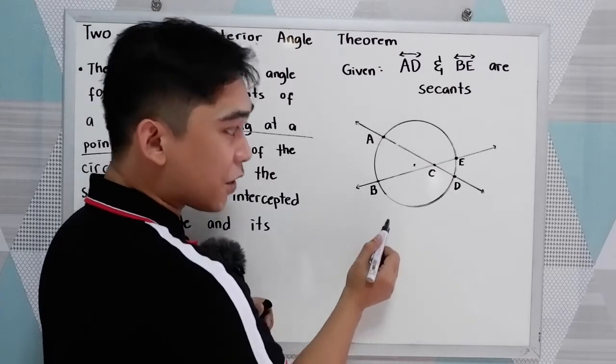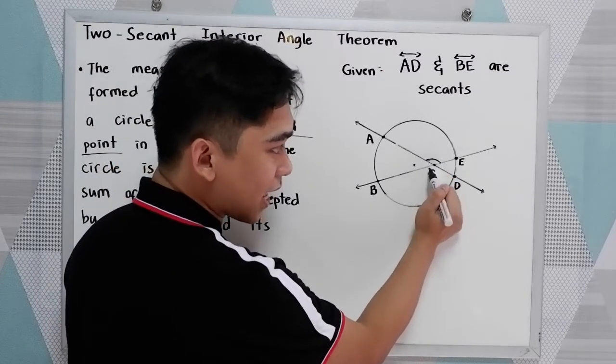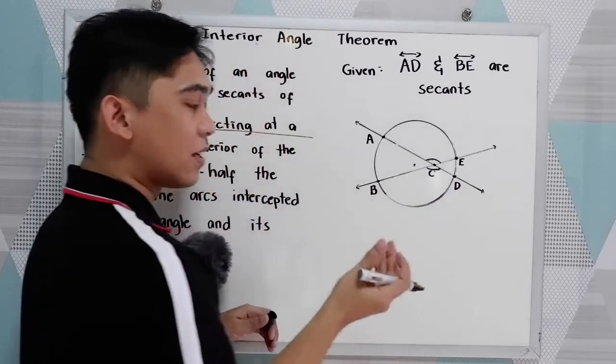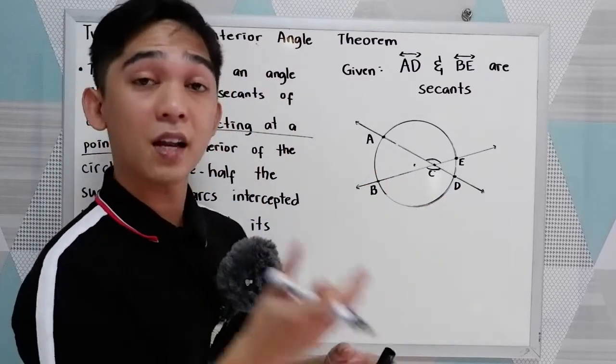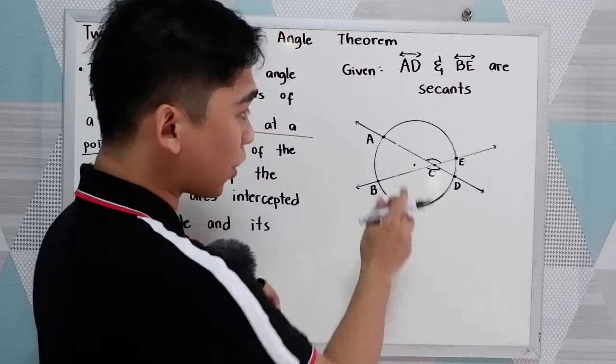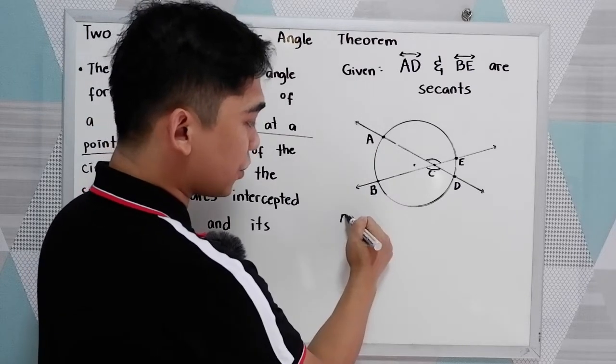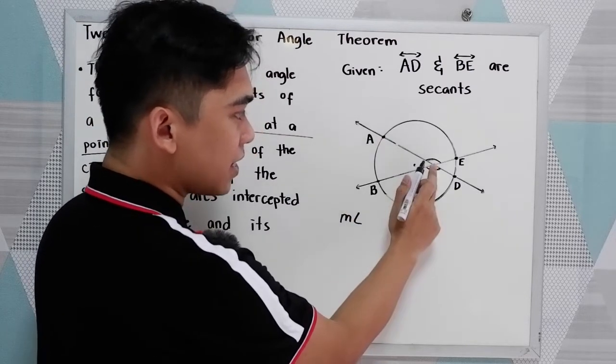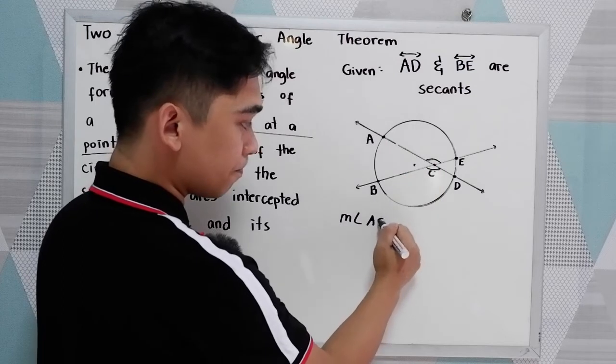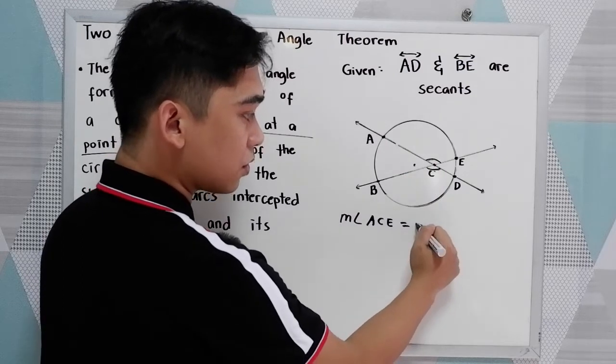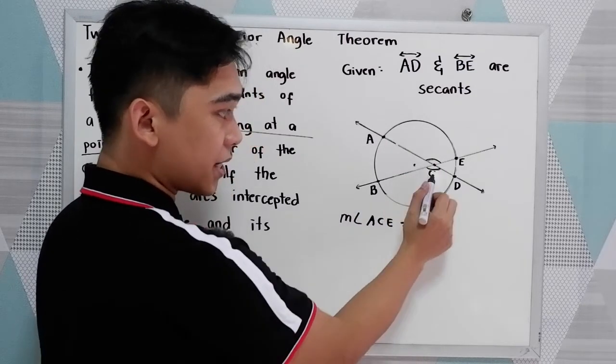So we have vertical angles, this angle and this angle. In our theorem, vertical angles are congruent. Therefore, the measure of angle ACE is equal to the measure of angle BCD.